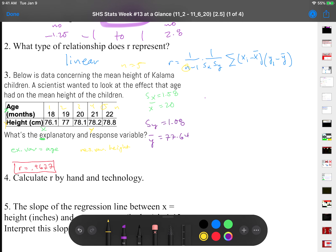So then we just create a chart. I want the age, so I'm just going to write those numbers: 18, 19, 20, 21, and 22. And the second list we had in yellow, which is the height: 76.1, 77, 78.1, 78.2, and 78.8.